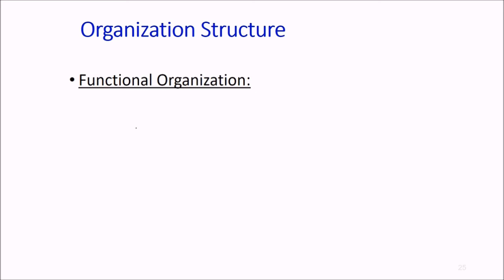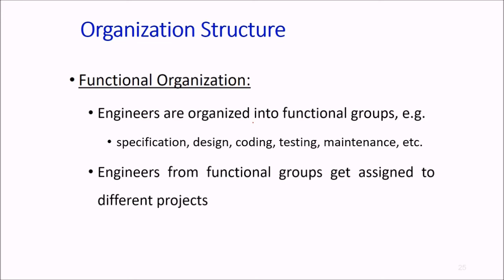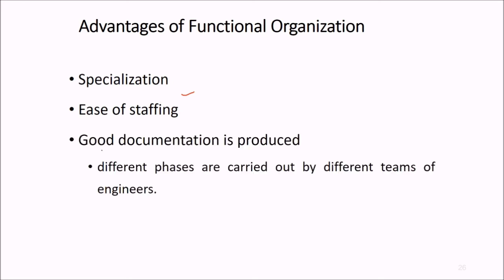Then we come to organization structure. First is functional organization. Engineers are organized into various functional groups depending upon the function they perform. For example, one group performs specification, another does design, third is coding, then testing, and there's a team for maintenance. Engineers from functional groups get assigned to different projects, not only one project. Advantages of functional organization: first, specialization. A testing person will do testing only. Ease of staffing - knowing where and when to put whom. We can easily produce good documentation because different phases are carried out by different teams, and errors can be identified quite early.